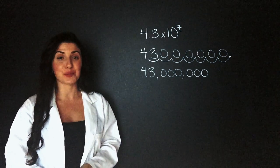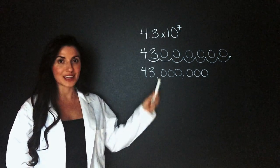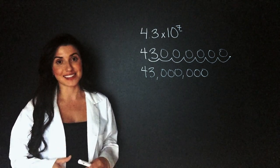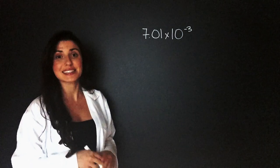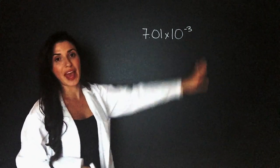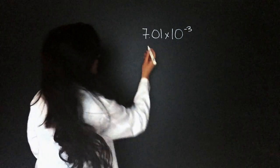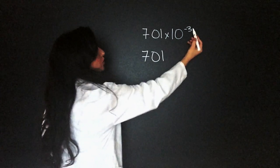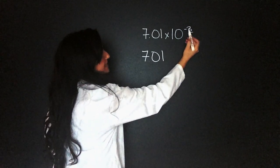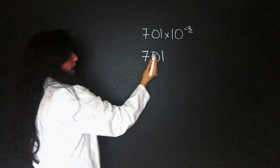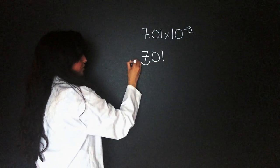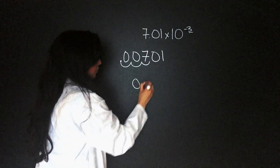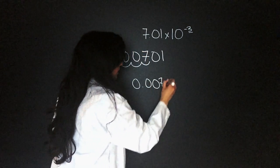Do you see the difference in punching 43 million into your calculator versus punching in scientific notation? Scientific notation makes math and science very easy. Now we're going to take a scientific notation with a negative exponent and find the number. I'll put 701. The decimal is here and I have to move three spaces, but it's a negative exponent so I'm going this way: one, two, three. That's the new decimal — fill in the zeros. So our new number is 0.00701.